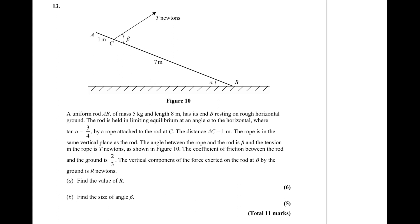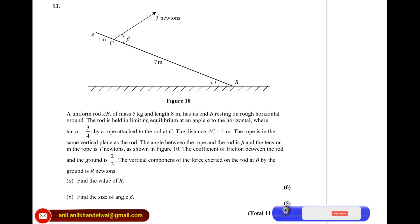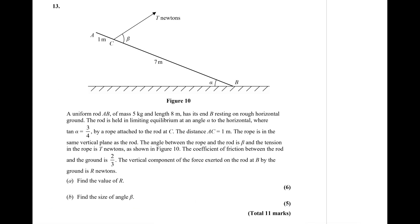Find the value of R, and part B is to find the size of angle beta. I hope the question is absolutely clear. Let us try to understand how we solve this particular question. This is a very important question from a test point of view, as the coefficient of friction is also given to us and we need to use this to solve the problem.